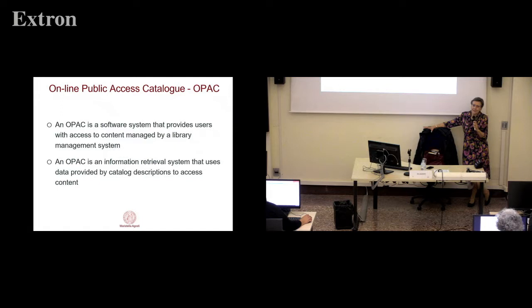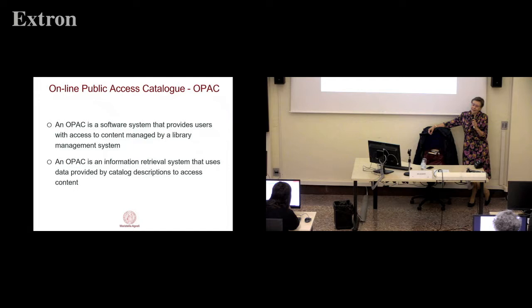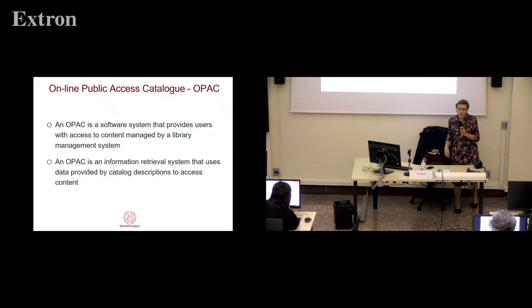What is really an OPAC? It's a system that retrieves information for the final user. The area of information retrieval — which I think most of you know — is the area that generated search engines. Search engines are a particular case of information retrieval systems: systems that permit us to retrieve digital information through a network. In particular, search engines manage documents in web pages, but information retrieval systems can manage laws of a country, documentation of an office, and so on.